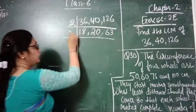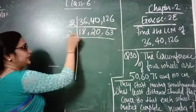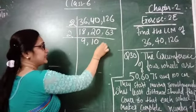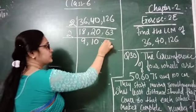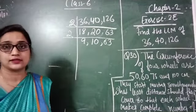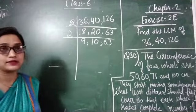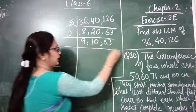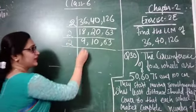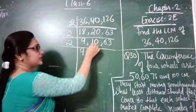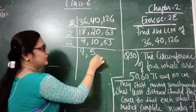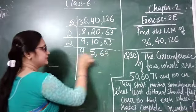Again dividing by 2: 18 divided by 2 is 9, 20 divided by 2 is 10, and 63 cannot be divided by 2 so we write 63 as it is. Next again by 2: 9 cannot be divided, so write 9 as it is. 10 can be divided by 2 to get 5, and 63 remains as it is.